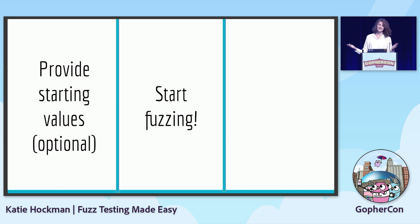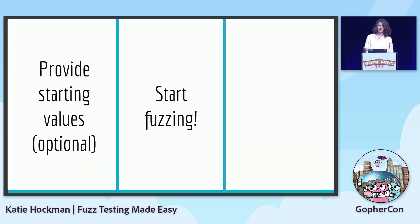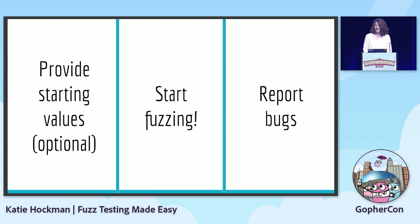Next, fuzzing is going to start. A fuzzing engine will look at the starting values, perform mutations, and start testing your code. The Go fuzzer can run upwards of hundreds of thousands per second, so it can do a lot really quickly. And this is where the magic is going to happen. And finally, if it finds a bug, it's going to tell you — which is important, that's what you're looking for.